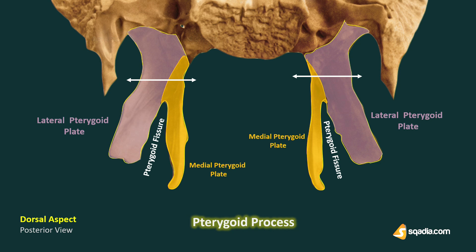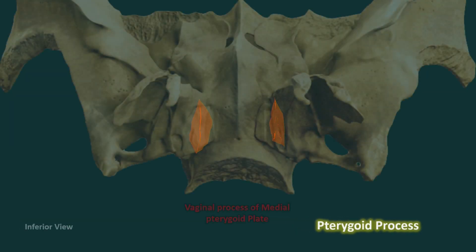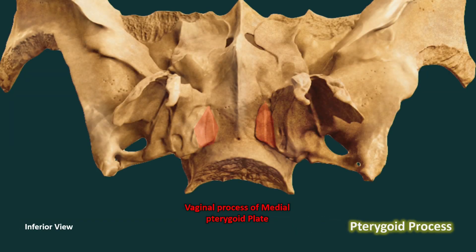On the base of the pterygoid process we have a vomerovaginal groove, and as the name suggests, it along with the vomer forms the vomerovaginal canal.